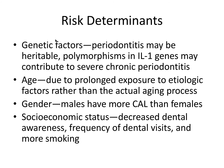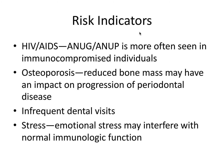Risk determinants — things out of your control — include genetic factors, age, gender, and socioeconomic status. Risk indicators are not causally associated with disease; these include HIV or AIDS, where the acute necrotizing forms of both gingivitis and periodontitis are more often seen in immunocompromised individuals. Osteoporosis, with reduced bone mass, could impact the rate of progression of disease. Infrequent dental visits and stress can also interfere with normal immunologic function, which as we discussed, the immune system is very involved with the periodontal disease process.